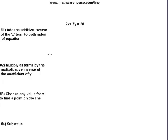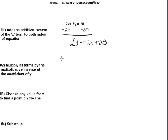Let's convert 2x plus 7y equals 28 from standard to point slope form. The first step is to find the additive inverse of the x term and add it to both sides. The additive inverse of 2x is negative 2x, so adding negative 2x to both sides gives us 7y equals negative 2x plus 28. Then we multiply all terms by the multiplicative inverse of the coefficient of y — the multiplicative inverse of 7 is 1/7.